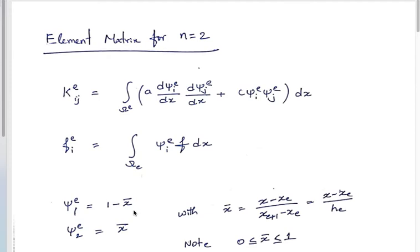So psi_{e1} equals 1 minus x_bar — a linear function whose root is at x_bar equals 1. Recall that roots of a polynomial are the values of x at which the function is zero. For psi_{e1}, the root is 1 (local node 2), so we write it as 1 minus x_bar: it has value 1 at x_bar equals 0 and value 0 at x_bar equals 1.